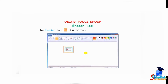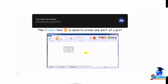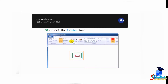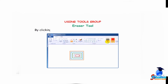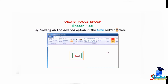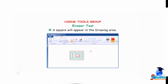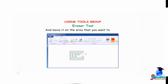The eraser tool is used to erase any part of a picture. Select the eraser tool from the tools group. Choose the size of the eraser by clicking on the desired option in the size button menu. A square will appear in the drawing area. Hold down the left mouse button and move it over the area that you want to erase.